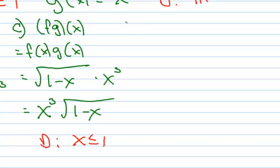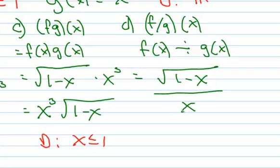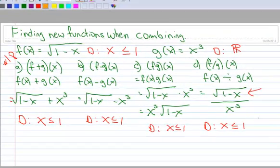And then let's do division, that's our last one here. So I have f divided by g of x. So this really means I'm going to take f(x) and I'm going to divide it by g(x). So my f(x) is the square root of 1 minus x, and that's all over x cubed. So let's talk about our domain here.